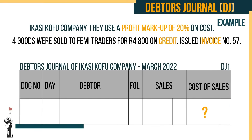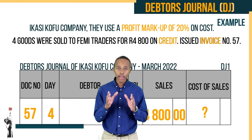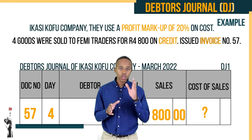The invoice number is 57, the day was the 4th. The folio will only be recorded when we learn about the debtor's ledger. The sales column is R4,800 — all of this information was given to us. We now have to calculate the cost of sales column ourselves.